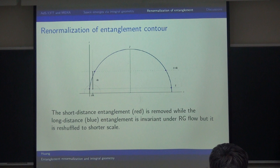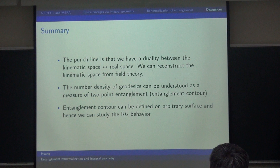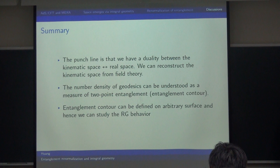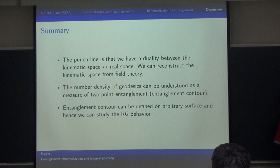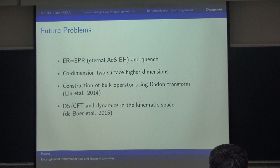To summarize: the punchline of this talk is that we have a duality between real space and kinematic space, and the geometry of one can determine the other. It is easier to reconstruct the geometry of kinematic space, since they are just objects like geodesics or, in higher dimensions, some minimal surface. The number density of these geodesics can be understood as the entanglement contour, giving a measurement of the two-point entanglement. We can also study the renormalization of this entanglement, because the contour can be defined on all these different surfaces.